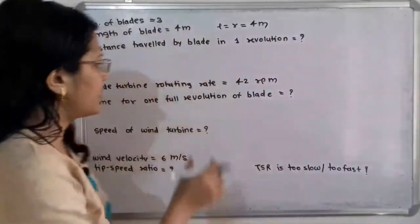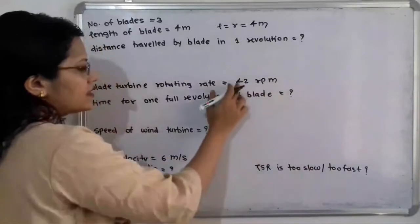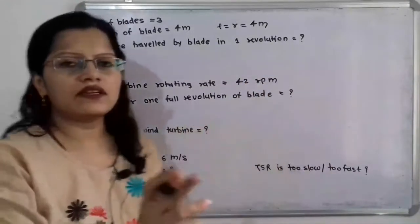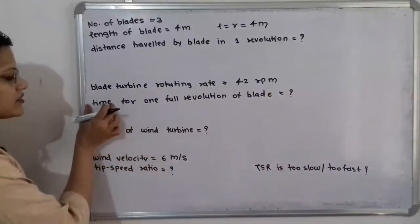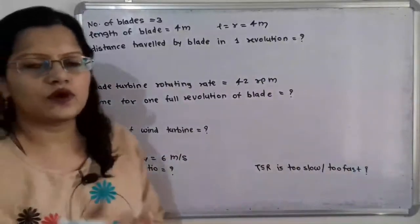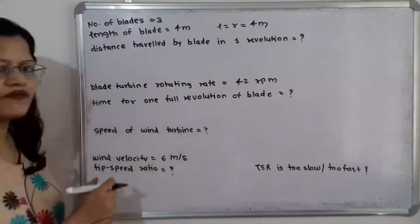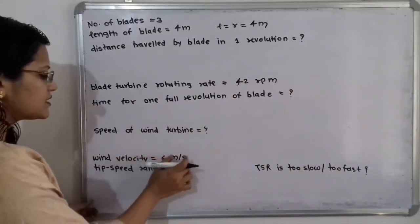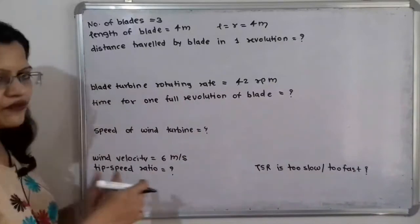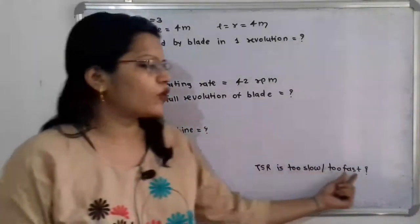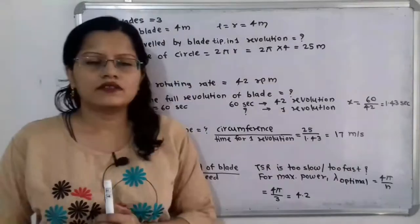The blade turbine rotating rate is 42 RPM, meaning 42 revolutions per minute. We have to find the time for one full revolution of the blade. We also need to find the speed of the wind turbine. The wind velocity is given as 6 meters per second, and we have to find the tip speed ratio (TSR). Finally, we must determine whether this TSR is too slow or too fast for maximum power.